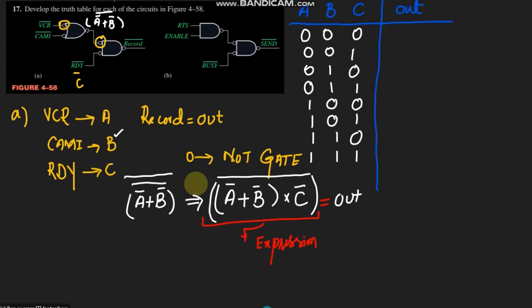Now each of them is applied to the expression to find the output. When a=0, b=0: a' = 1, b' = 1, so 1+1 = 1 and the complement of it is 0. When a=0, b=0, c=0: a' = 1, b' = 1, 1+1 = 1, multiplied by c' which is 1, so 1×1 = 1, and the whole complement gives 0. That makes all of this 0 and the whole complement gives 1.